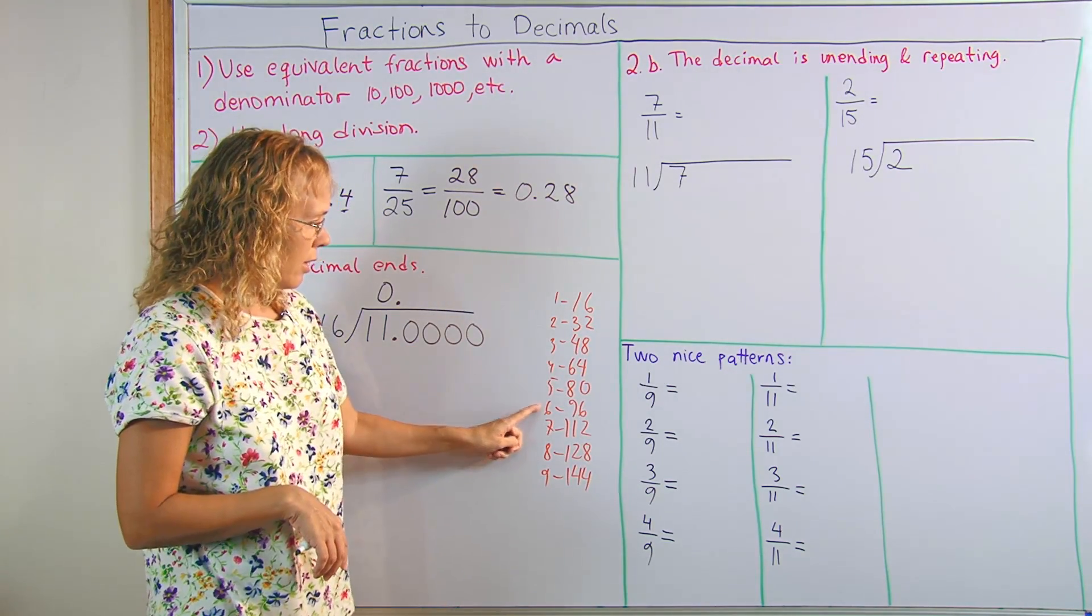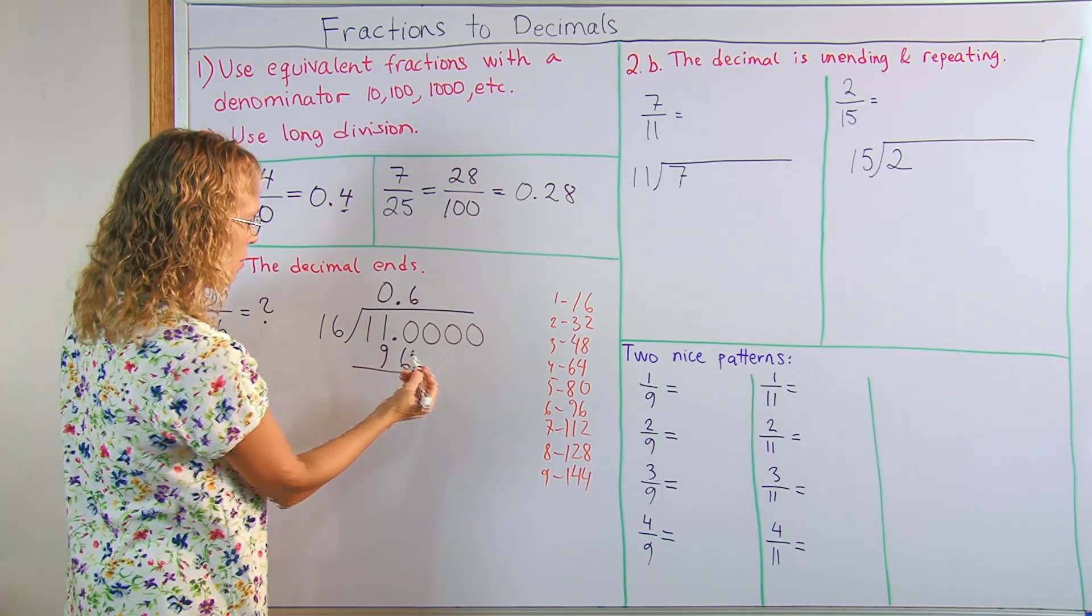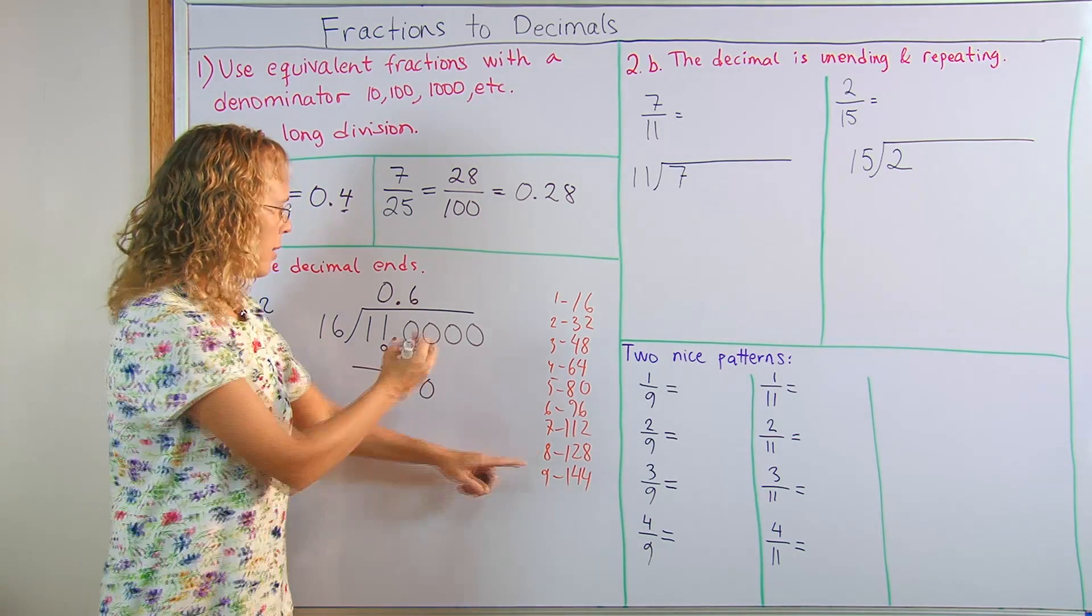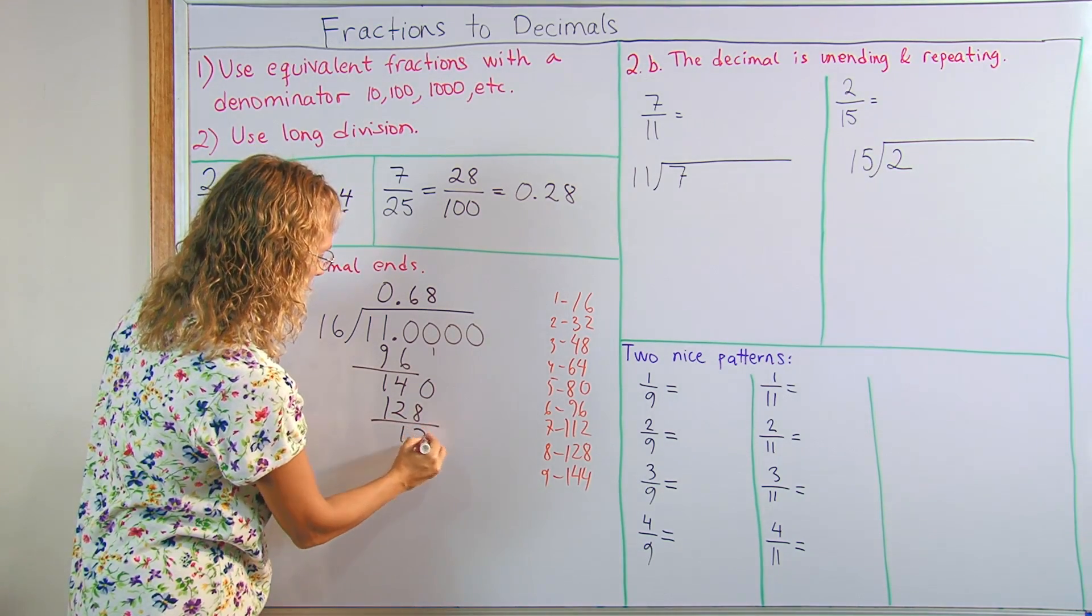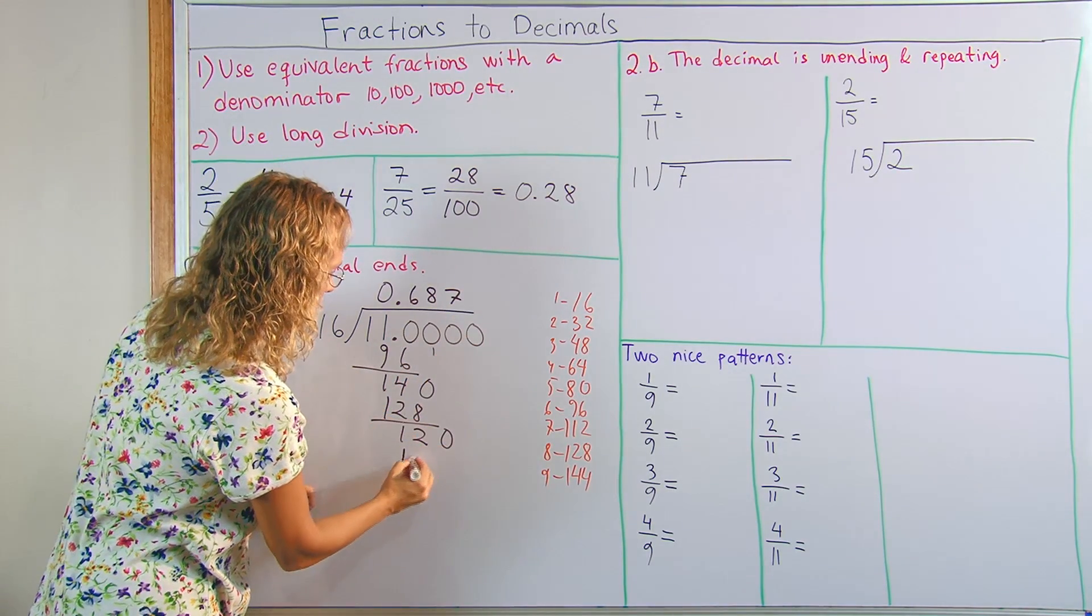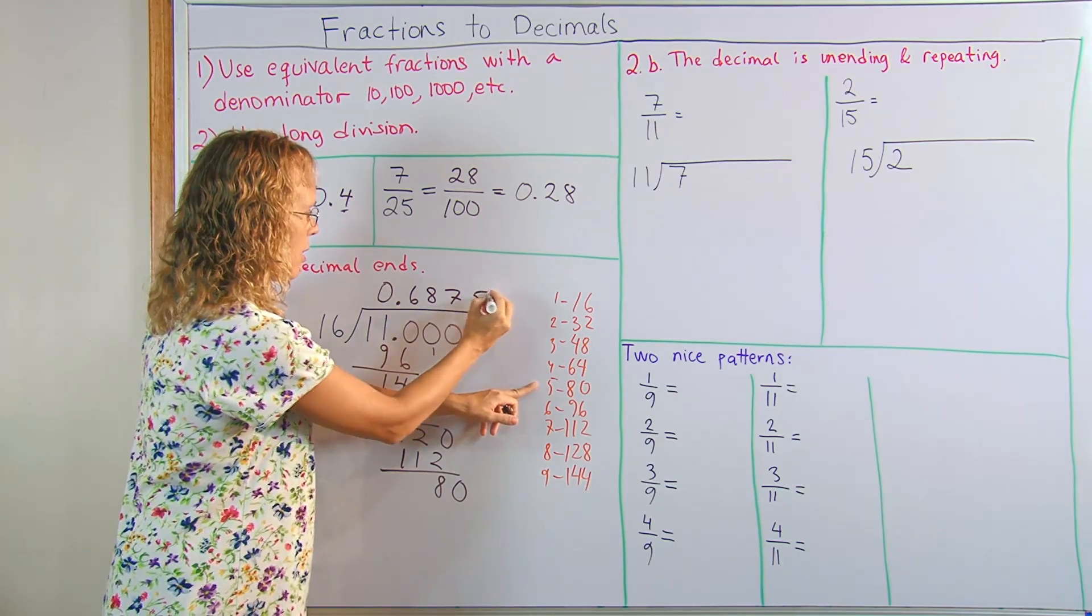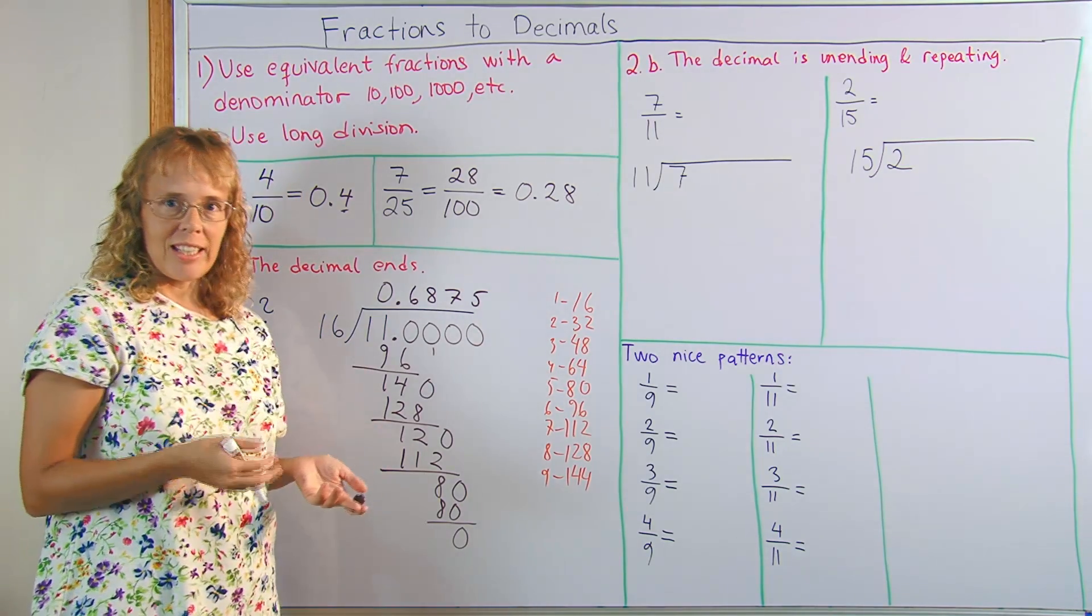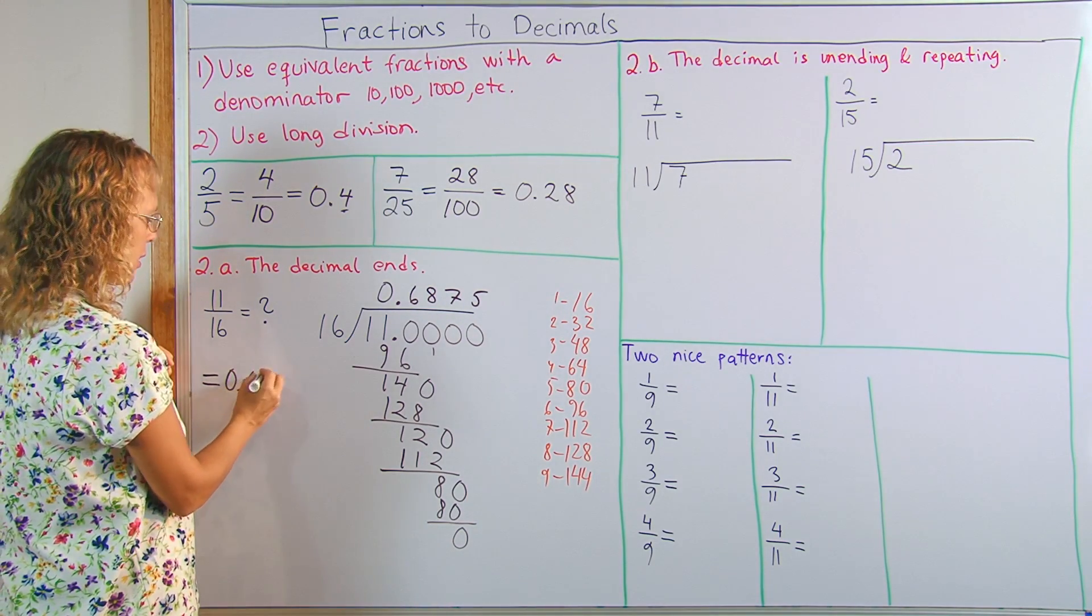So 110 over here, six times. Six times 16 is 96. And then 110 minus 96 is 14. And drop this 0, 140. That would be 8 times. 8 times 16, 128. Subtract and 12. And drop another 0. 120, 7 times. And 7 times 16 is 112. And subtract 8. Drop another 0. 5 times and it's even. 5 times 16, 80. And no more division to do. So this division went evenly in that sense. And our decimal ends right there. 11 sixteenths equals exactly 0.6875.